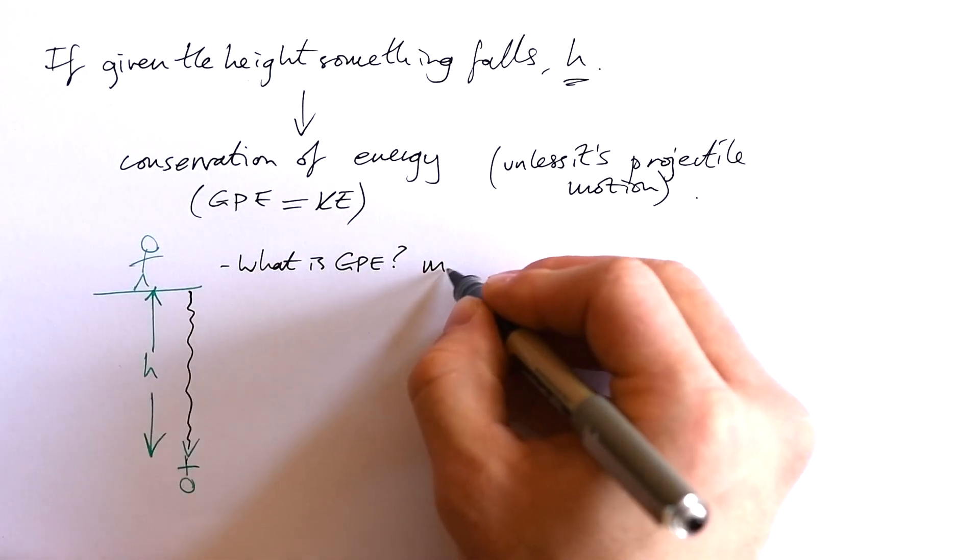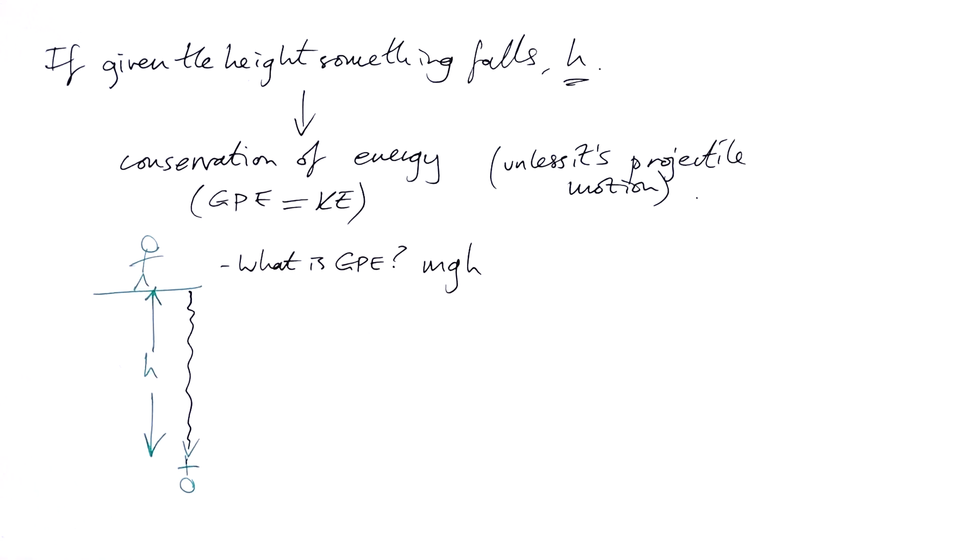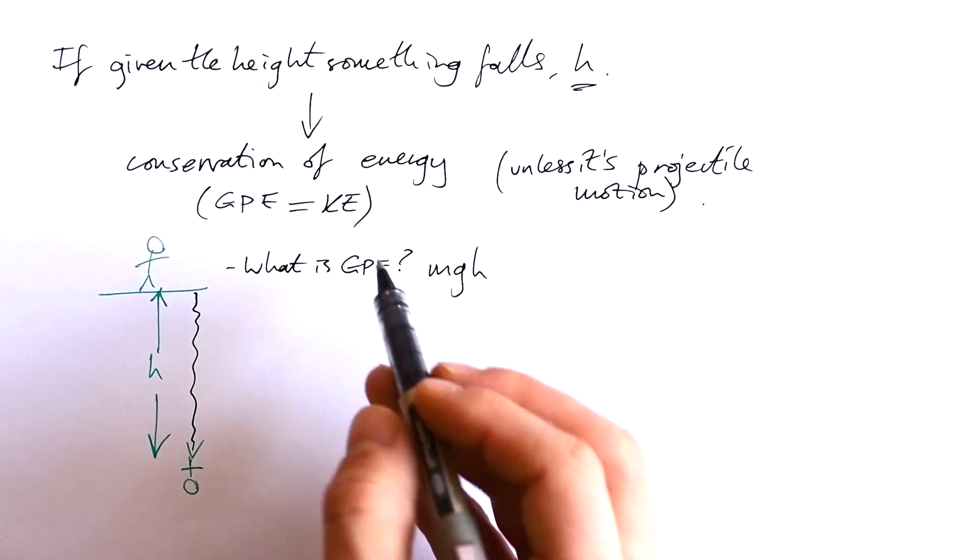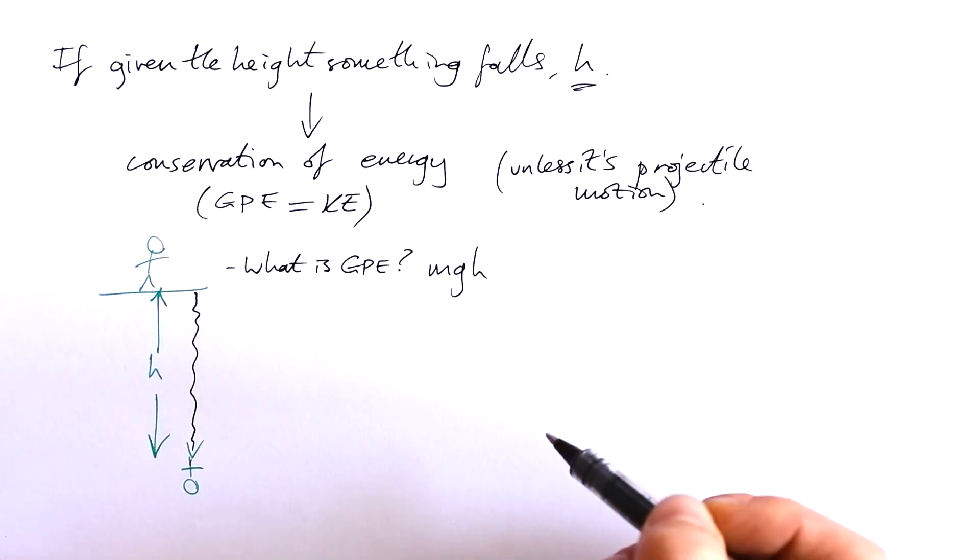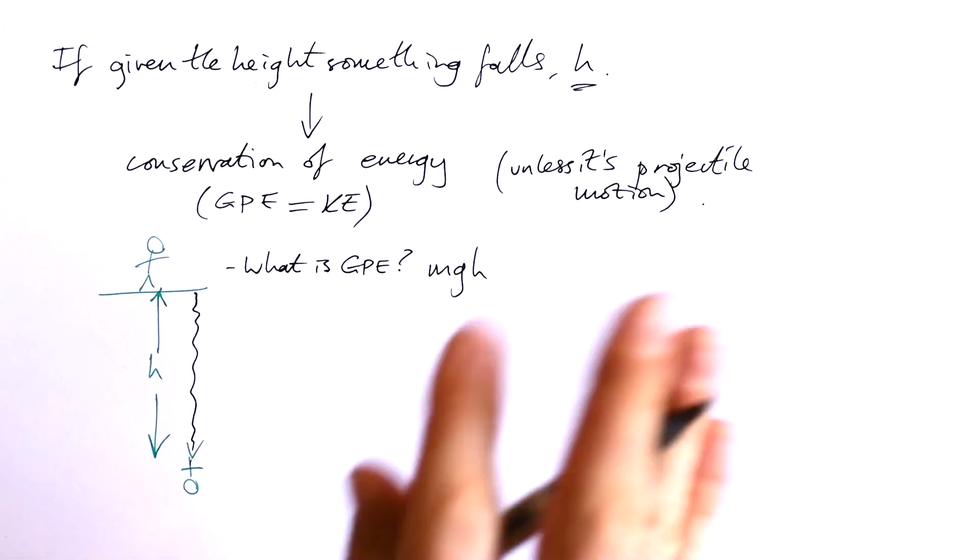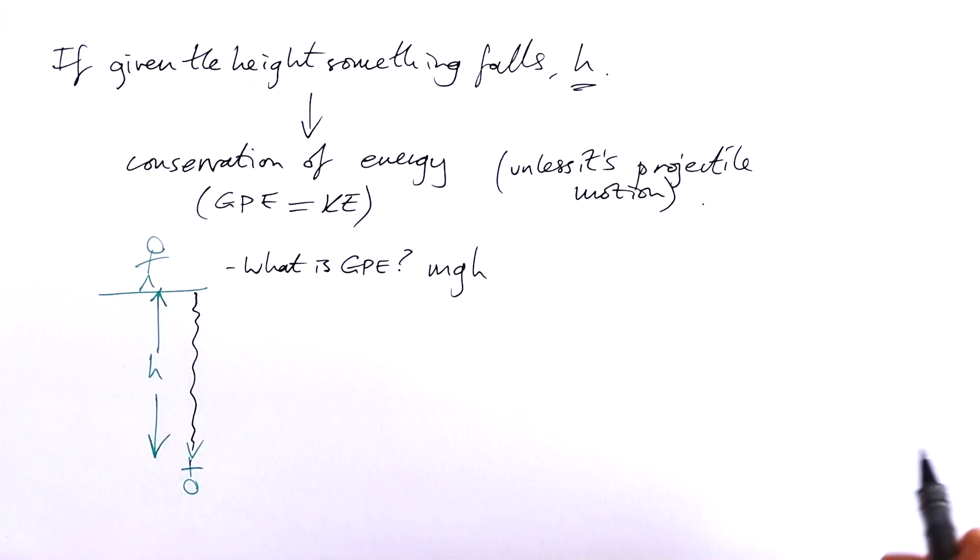GPE is equal to MGH—that's mass times gravitational field strength, that's 9.81, times the height that something falls. If you want to be super accurate, technically we're asking what is the change in gravitational potential energy, and therefore it's going to be MG delta H, but it doesn't matter really when it comes to the answer.